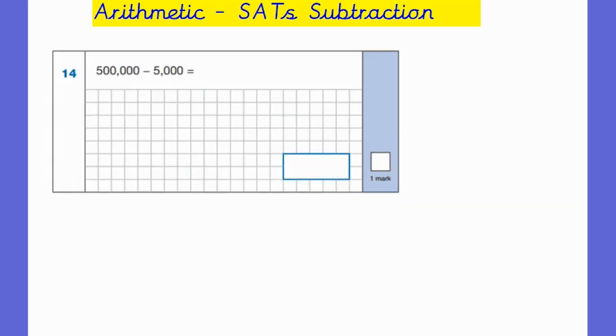The next question we're looking at is 500,000 take away 5,000. Now for this question a lot of children might use the column method, however they could also use some of their known facts. For example, if we take away a thousand from this, let's get rid of these zeros here, what we're actually looking at is 500 take away 5. So because these numbers are large it might prompt the children to go for the column method, but it's not necessarily the quickest or most efficient method.